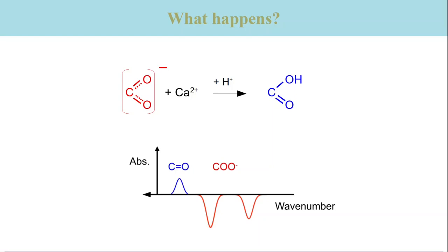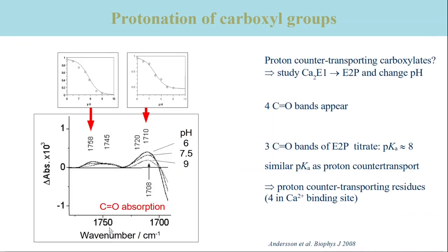This slide shows what spectral changes we expect when carboxylate groups become protonated. In the infrared difference spectrum, this leads to two negative bands due to the antisymmetric and symmetric stretching CO vibrations of the ionized group. The appearing carbonyl group of the protonated carboxyl group gives rise to a positive band above 1700 reciprocal centimeters. There will be other positive and negative bands due to the protonation reaction, but they are outside the shown spectral region.